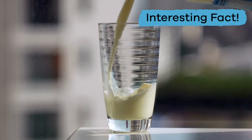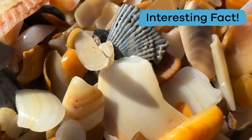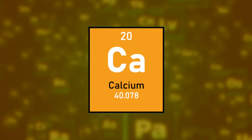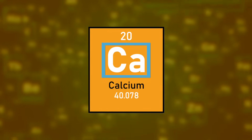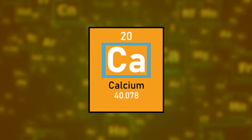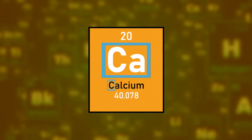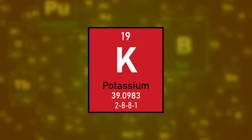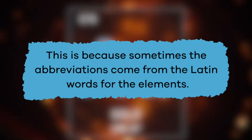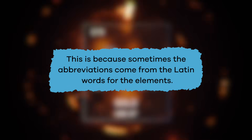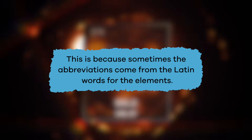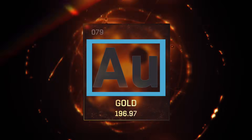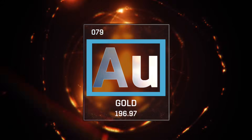Calcium is also found in milk, seashells, and in cement. Like most elements on the table, the abbreviation for calcium starts with the same letter as its name. Sometimes, though, other letters are used. This is because sometimes the abbreviations come from the Latin words for the elements. For example, Au is the symbol for gold.